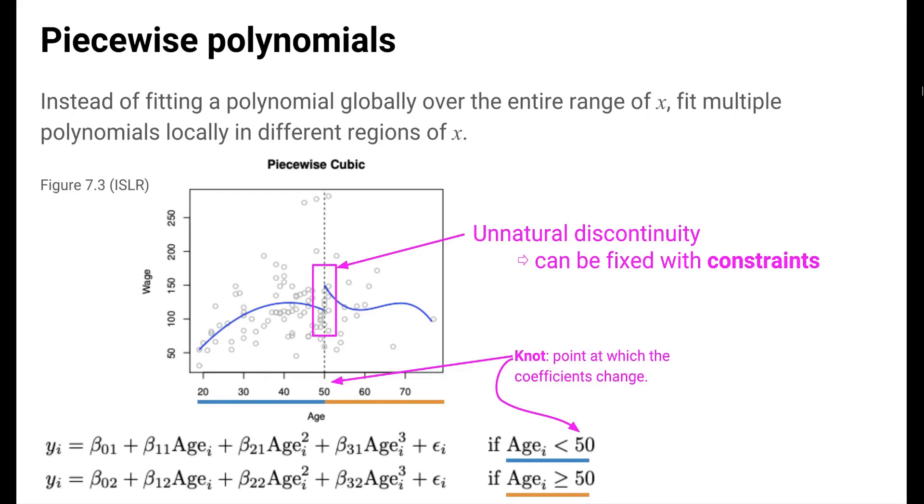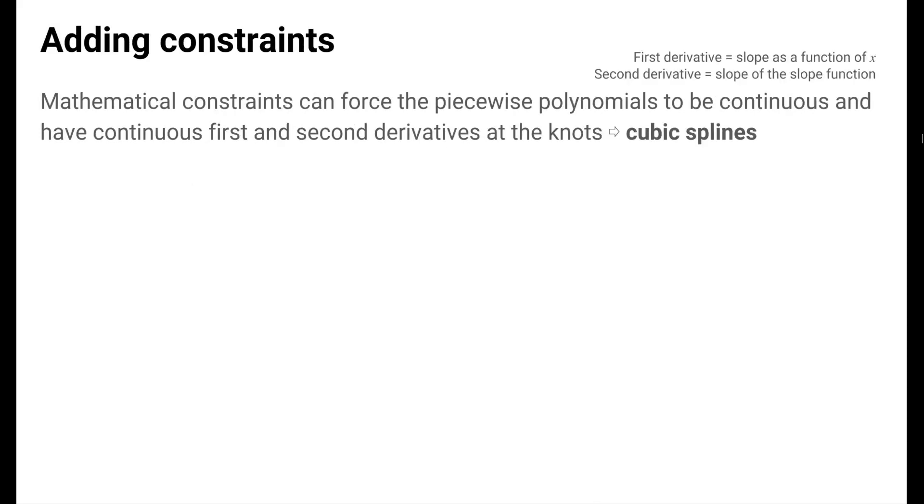But it turns out that piecewise polynomials can be rescued with the help of mathematical constraints. These constraints enforce qualities of smoothness at the knots. Mathematical constraints can force the piecewise polynomials to be continuous and have continuous first and second derivatives at the knots. Having continuous first and second derivatives means that the function will have continuous slopes and continuous slope slopes. The functions that arise are called cubic splines.